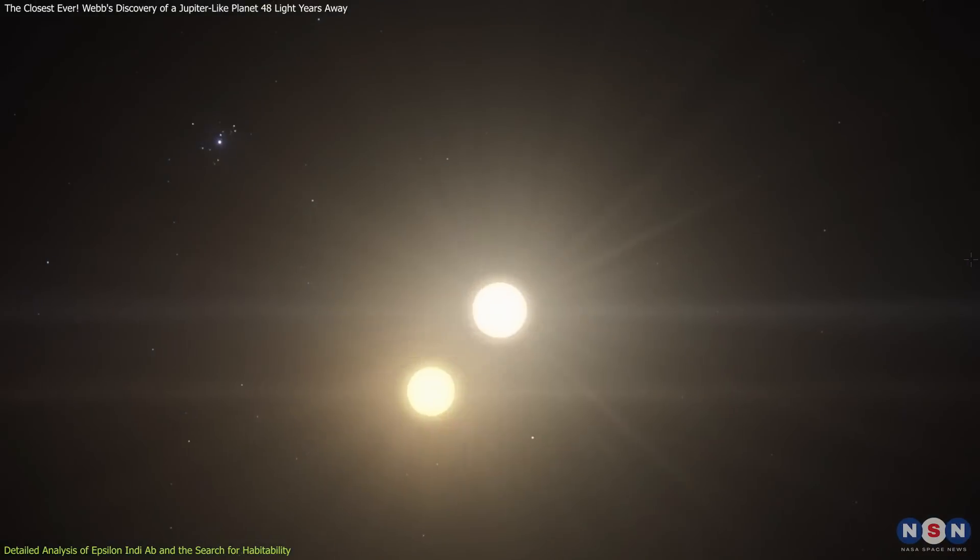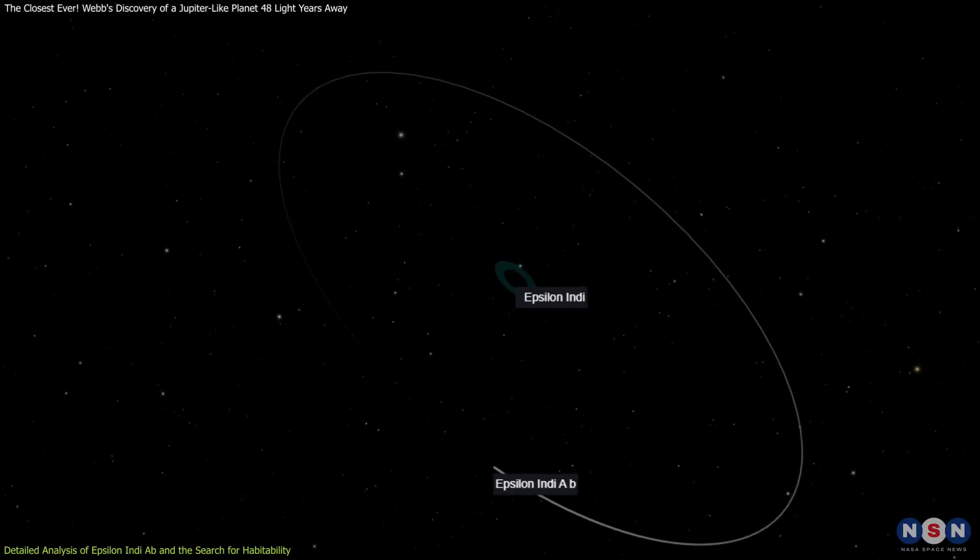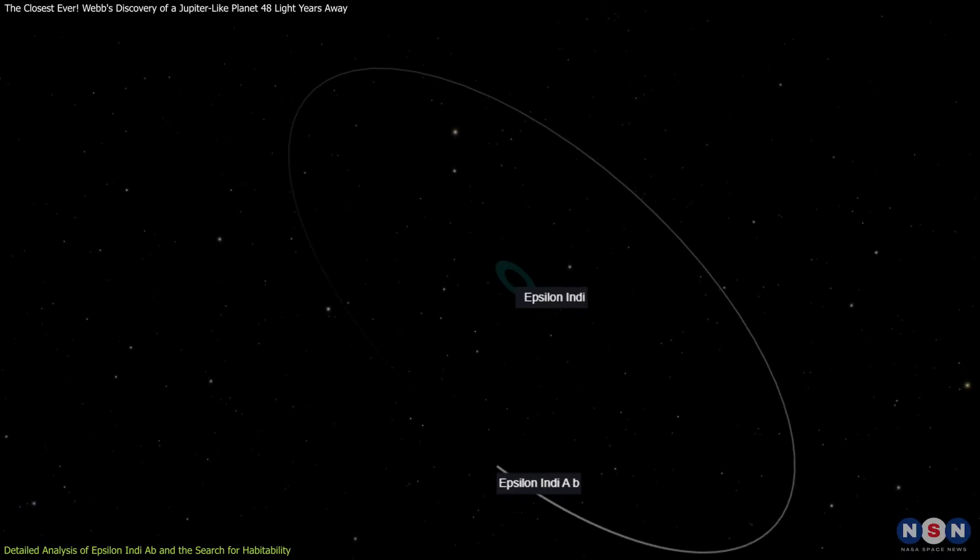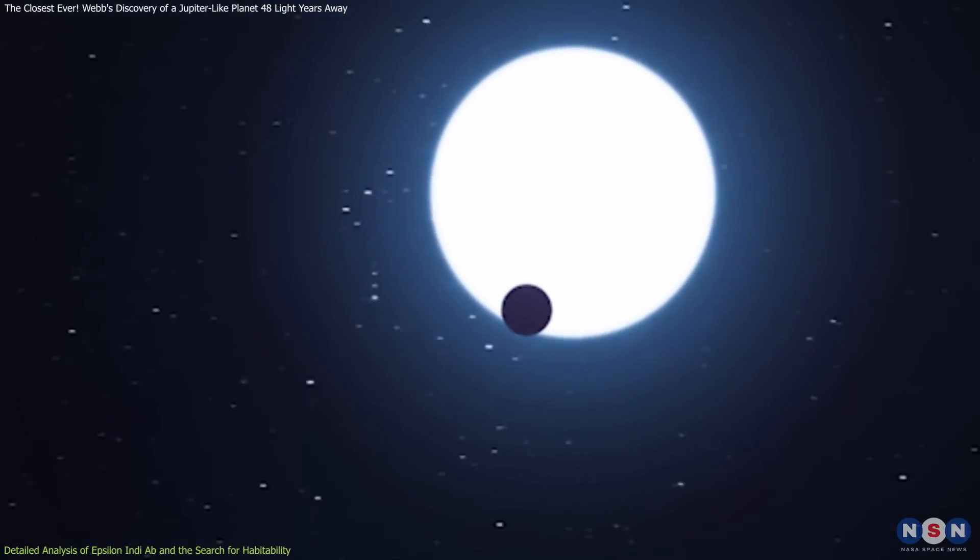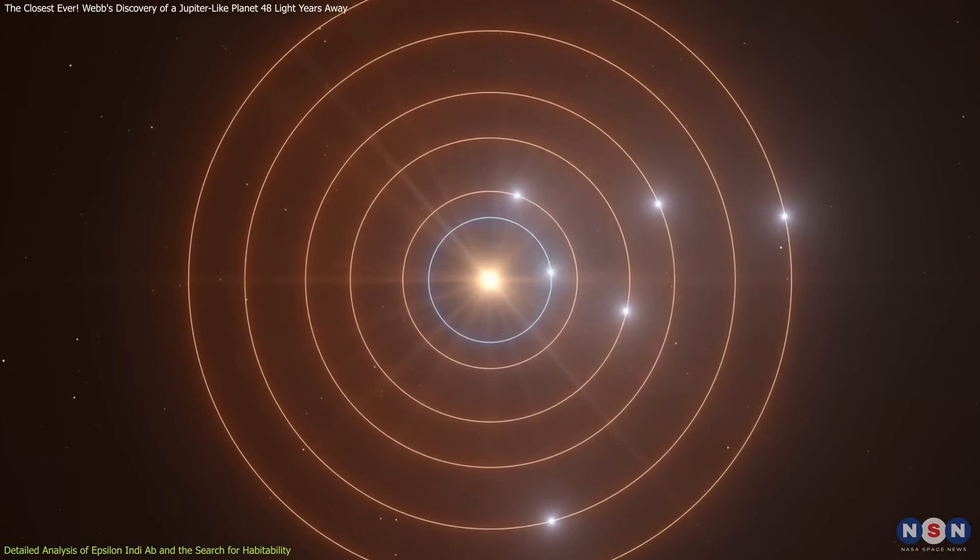The gravitational influences of multiple stars can lead to highly eccentric orbits, such as that of this exoplanet, suggesting a history of dynamic interactions and possibly past close encounters or resonances within its system.